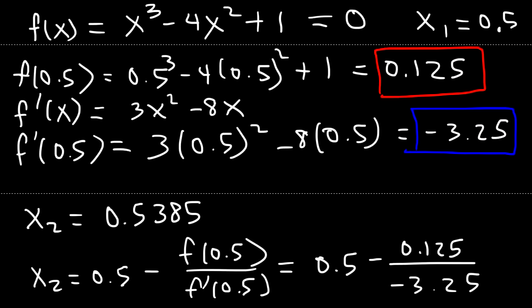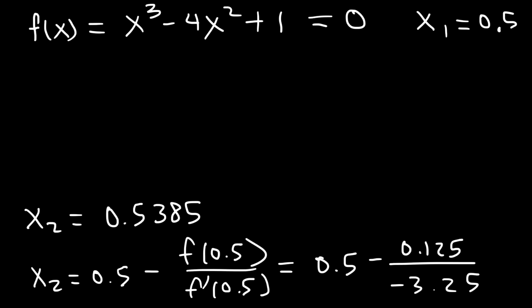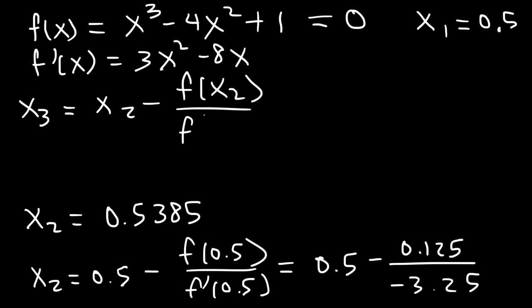So now, we need to do another iteration. So I'm going to rewrite the first derivative here because we're going to use it again. So x3 is going to equal x2 minus f of x2 over f prime of x2. So x2 in this example is 0.5385.